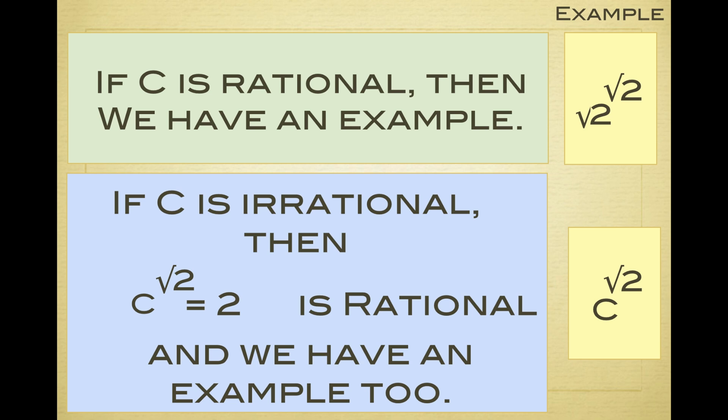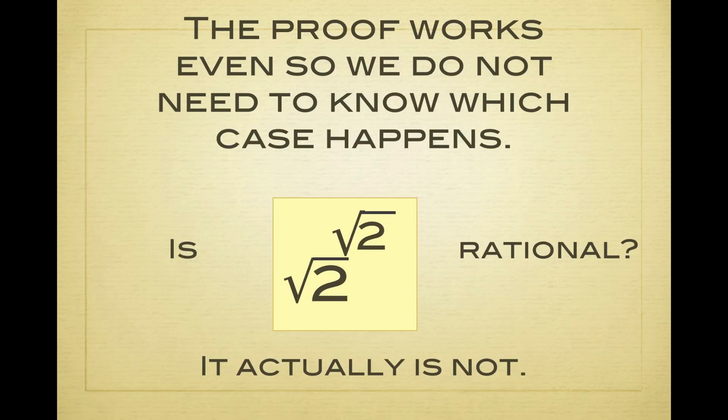So it's not clear which of these two examples is the right example because we don't know whether the square root of 2 to the power square root 2 is rational or not. But we don't need to know that, the proof works either way.